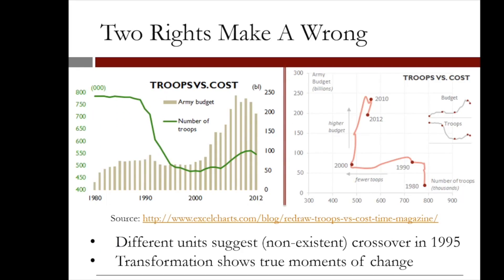Here is a before and after of the same data. On the left, we see US military expense on the right axis and troop count on the left axis. Both the line and bar plots are individually okay, but the combination is misleading. Because we have mixed two units — dollars and people — there is a false impression of some sort of crossover point in 1995 that does not exist.